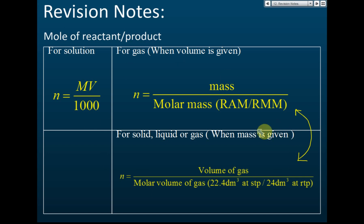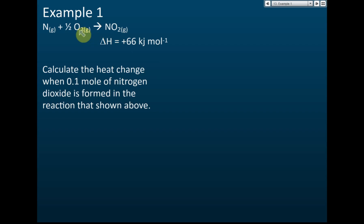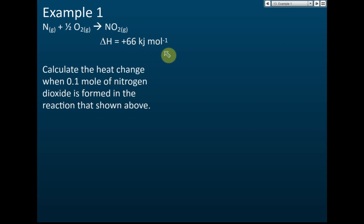Example 1 looks like a combustion reaction but is actually a formation reaction — specifically the heat of formation of nitrogen dioxide. One mole of nitrogen reacts with half a mole of oxygen to produce one mole of NO₂, and heat absorbed is positive 66 kJ/mol. The question asks: calculate the heat change when 0.1 mole of nitrogen dioxide is formed. Per mole means per one mole of the substance formed — so when one mole of NO₂ forms, it absorbs 66 kJ.